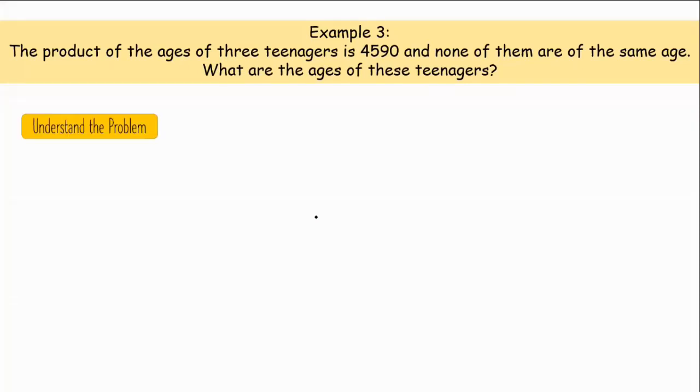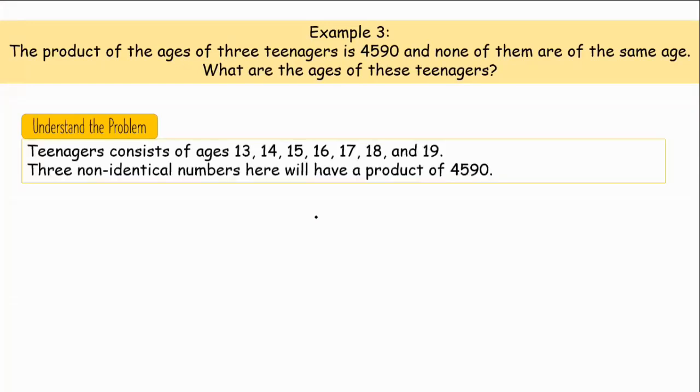Teenagers, kasi alam natin yung teenagers, ang age nito ay 13, 14, 15, 16, 17, 18, 19. Malamang teenagers nga eh. Hindi pwede ang 12, hindi pwede ang 20. Ito lang ang pwede natin. Tapos, none of them are the same age. Ibig sabihin, iba-ibang number yung pipiliin natin.